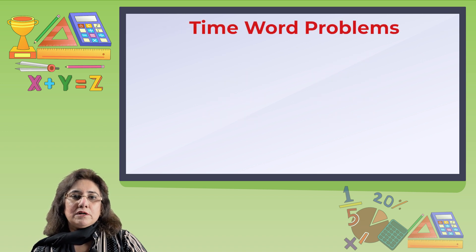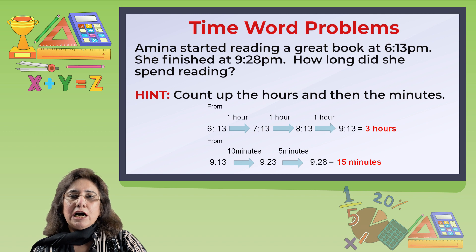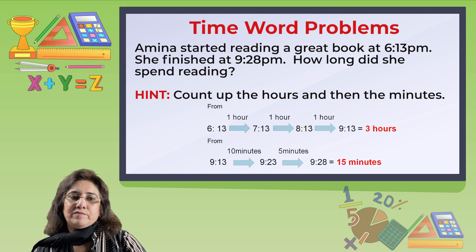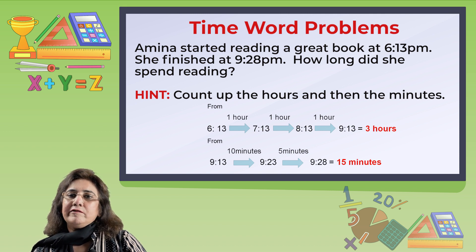Time word problems. Amna started reading a great book at 6:13 p.m. and finished at 9:28 p.m. How long did she spend reading? Count up the hours and then the minutes. From 6:13 to 7:13 is 1 hour, 7:13 to 8:13 is 1 hour, 8:13 to 9:13 is 1 hour — that's 3 hours. From 9:13 to 9:23 is 10 minutes, and 9:23 to 9:28 is 5 minutes — 15 minutes total. Amna spent 3 hours and 15 minutes reading.